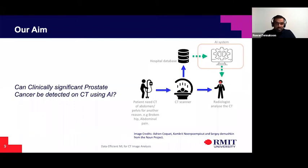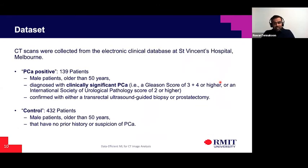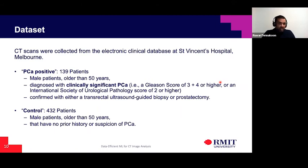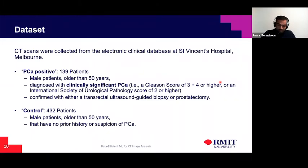To build this type of system, we first needed to answer: can clinically significant prostate cancer be detected on CTs using AI? To answer that, we collected a retrospective dataset from St. Vincent's Hospital, which has one of the largest prostate cancer clinics. The dataset consists of 571 patients: 139 patients diagnosed with clinically significant prostate cancer confirmed by biopsy, and 432 control patients — males older than 50, imaged at St. Vincent's for some other reason, with no prior history or suspicion of prostate cancer.